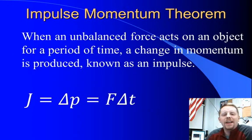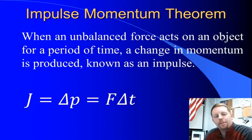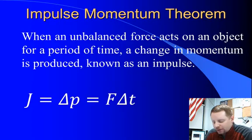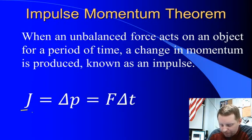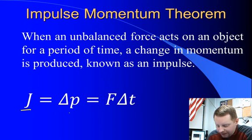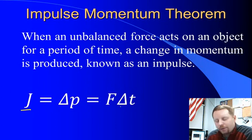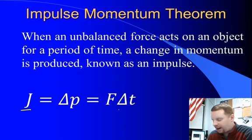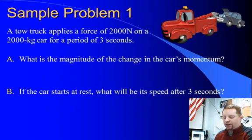What the theorem is really saying is: when an unbalanced force acts on an object for a period of time, a change in momentum is produced, and this is known as an impulse. So impulse J is a change in momentum, and that occurs when a force acts on an object for some period of time. This is a very useful equation, and I'll show you a couple of ways we can use it.